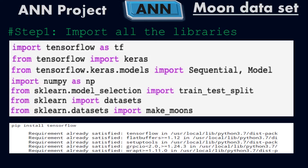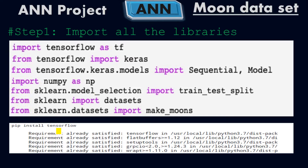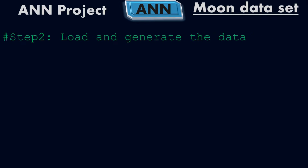One thing to note: if you haven't installed the TensorFlow library, simply write 'pip install tensorflow' in Colab, Jupyter, or Visual Studio and it will be installed. If you run all the libraries and still get an error, check whether TensorFlow is installed. Once installed, you can proceed to the second step: load and generate the data.